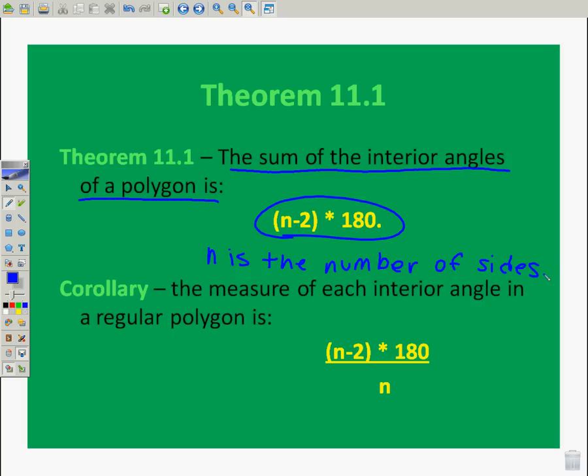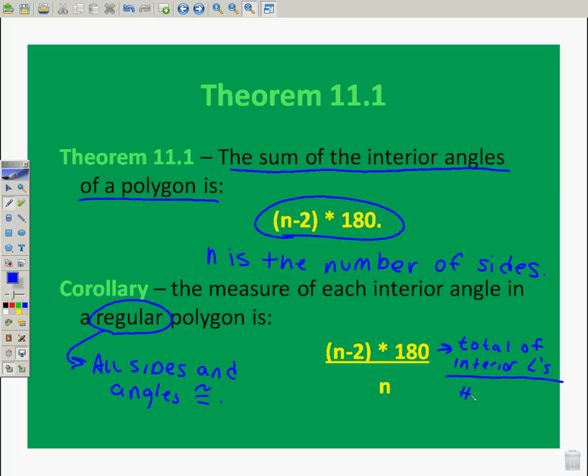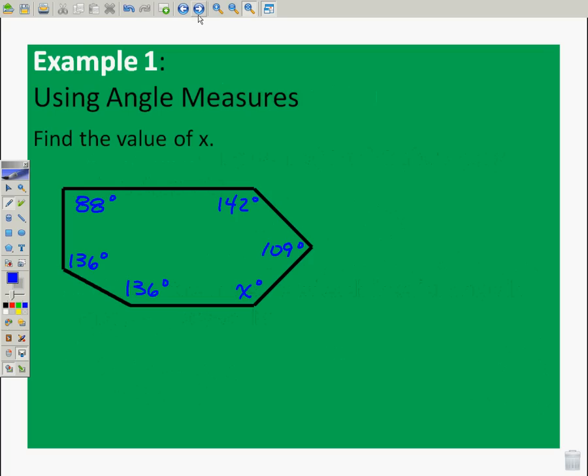When I have a regular polygon, regular, remember, means all sides and angles are congruent. I'm going to take the sum of the interior angles, total of the interior angles, and divide it by the number of angles. Because I want equal numbers of degrees in each. So, I'm going to divide the total by the number of angles. It's pretty intuitive. Feel free to pause it right here. I'm going to go on, but you can pause it and write that down.